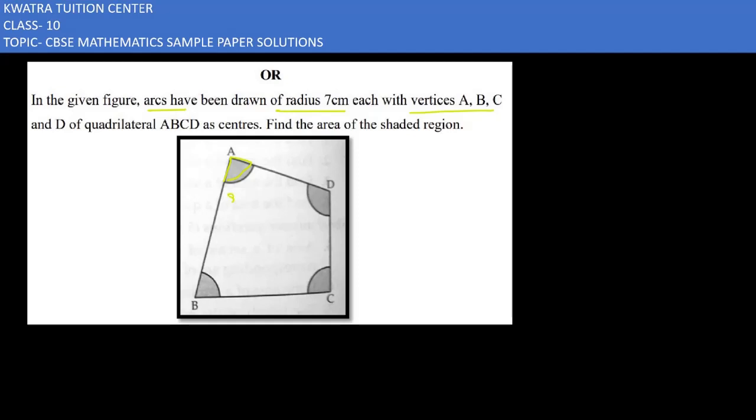All of our sectors are there, so we have to add all of the sectors. What will happen? Area of sector A plus sector B plus sector C plus sector D.